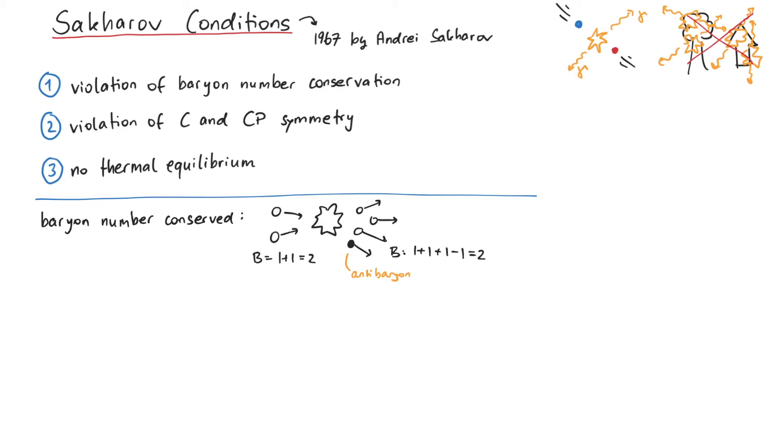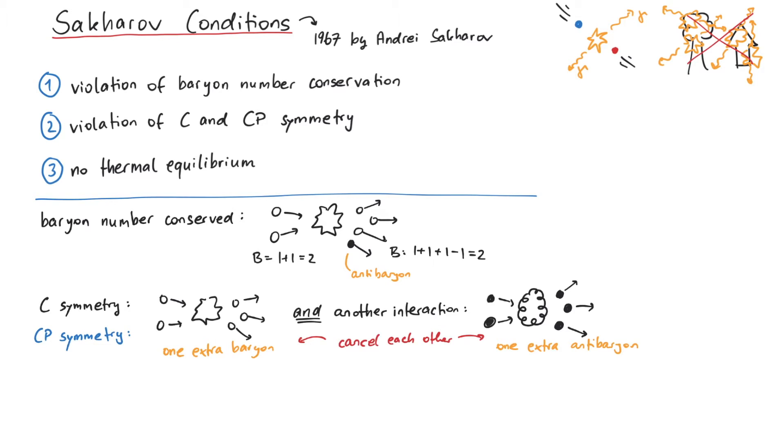Second, C and CP violation. C violation is necessary so that an interaction that produces more baryons than antibaryons is not balanced by a different interaction that produces more antibaryons than baryons. Likewise, CP violation is required, otherwise we would always get an equal number of left-handed baryons and right-handed antibaryons, but we explicitly don't want equal numbers of baryons and antibaryons.